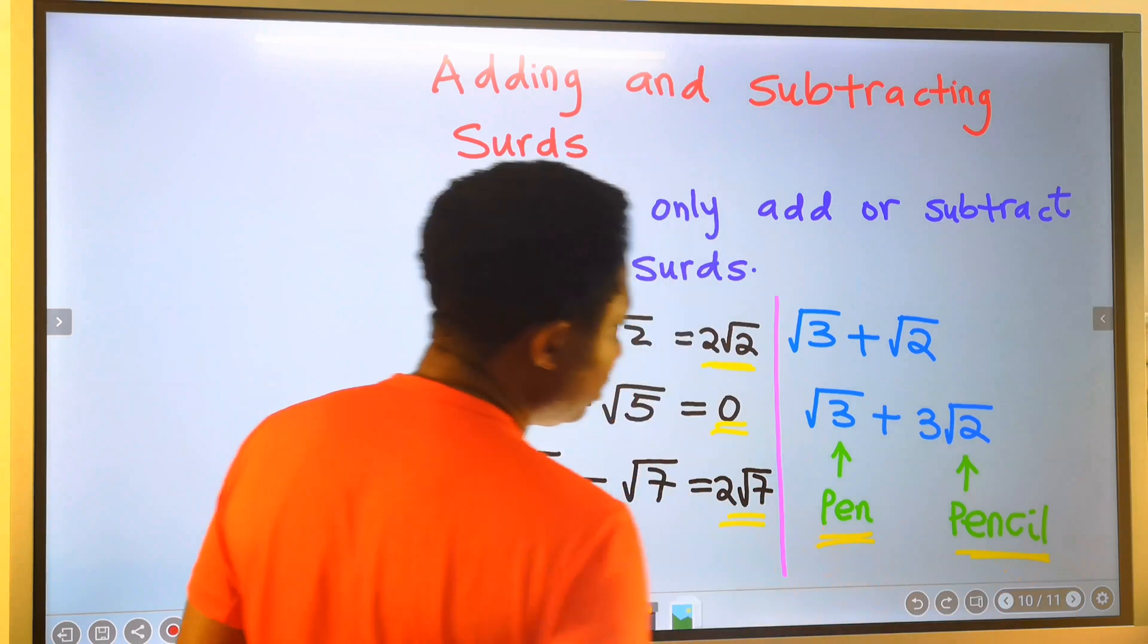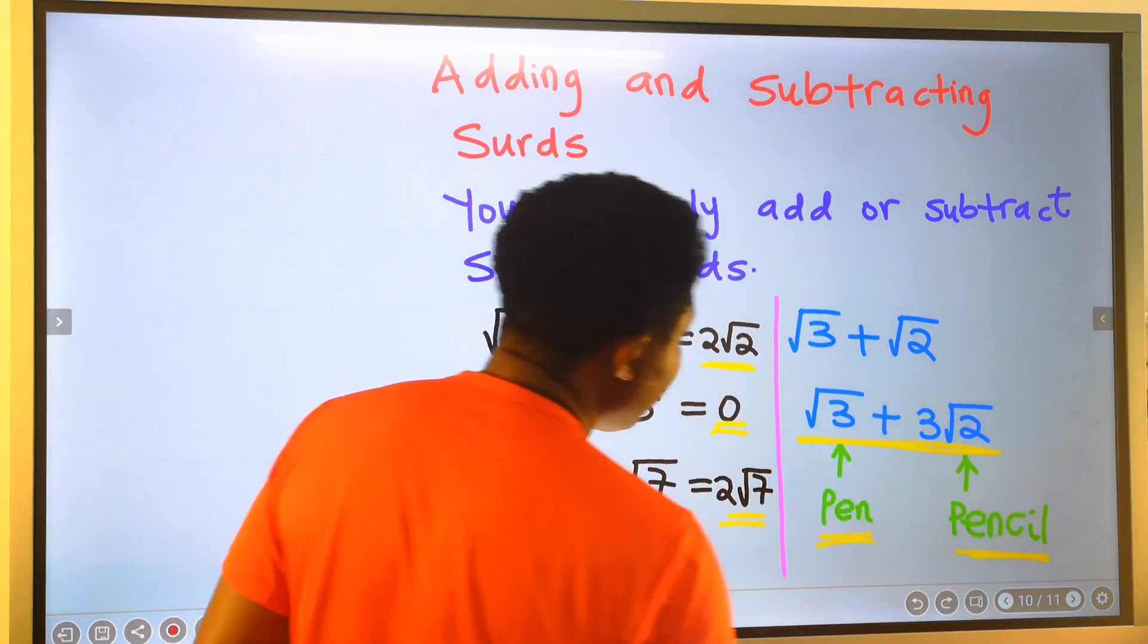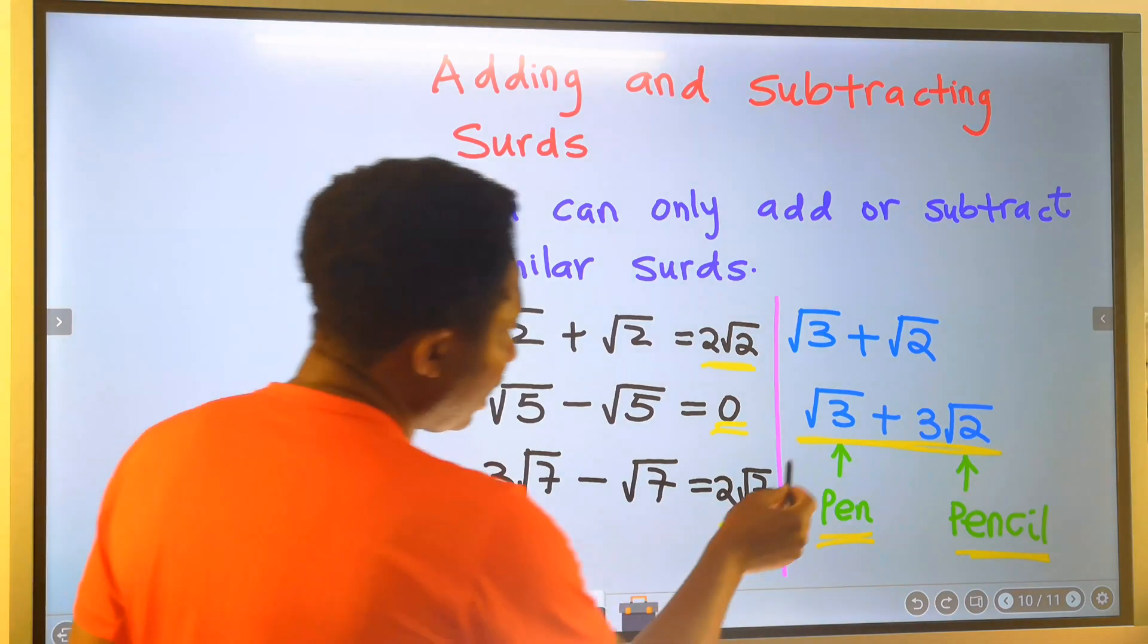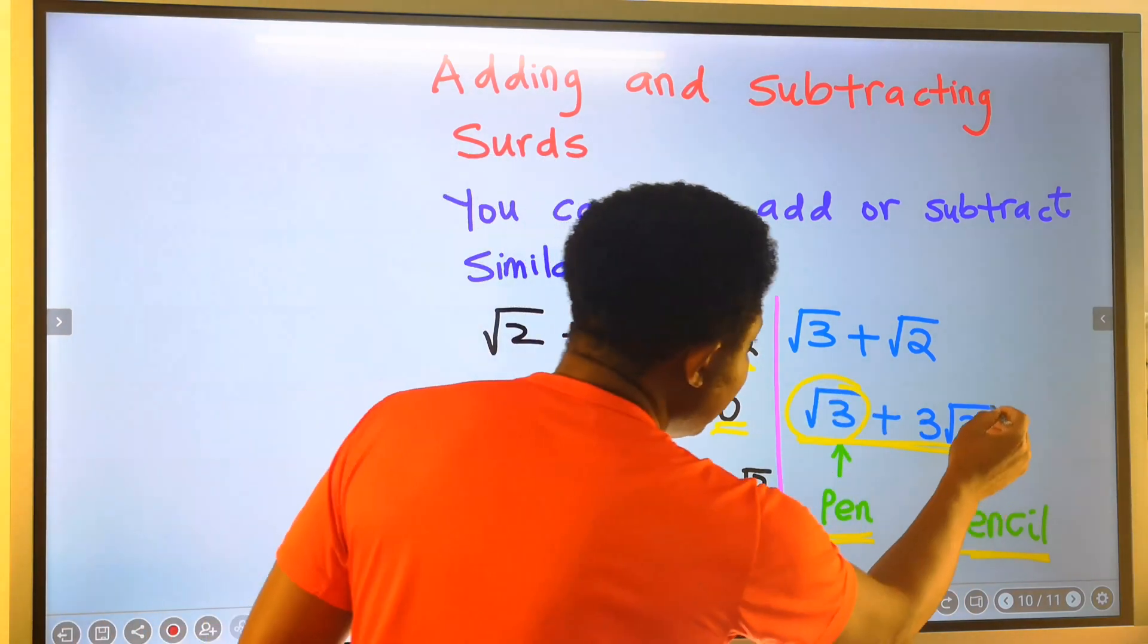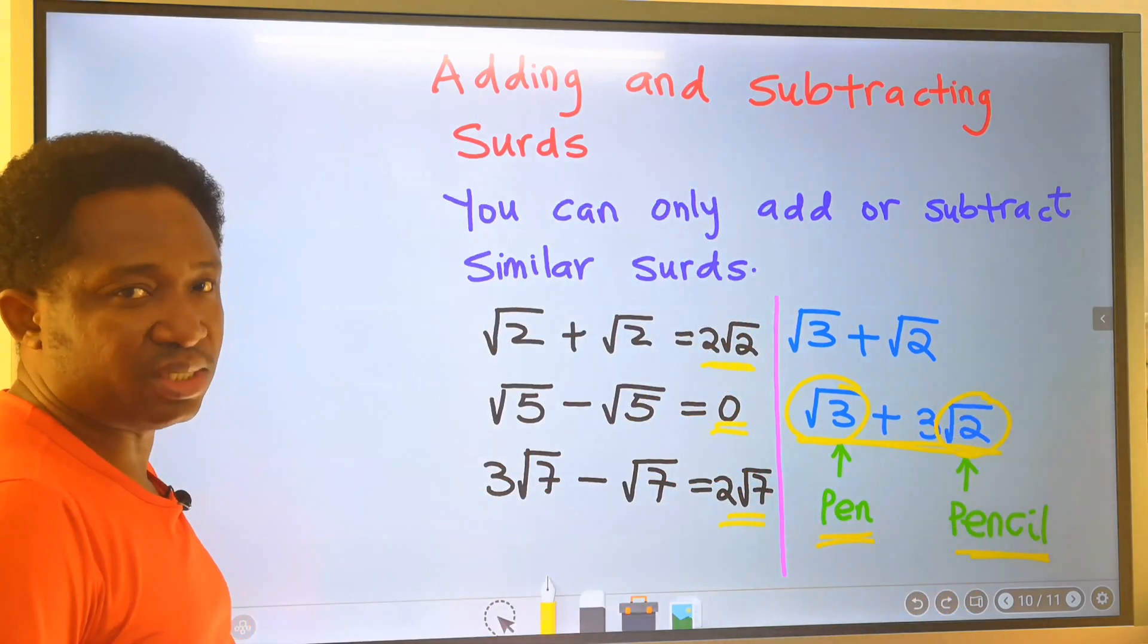Hence, we will leave our answer in this final order. This is root 3 and this is root 2. They are not the same.